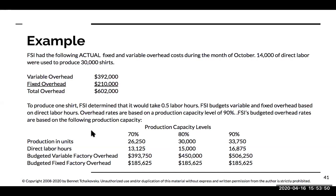Let's take a look at our ever-evolving example. FSI had the following actual fixed and variable overhead costs during the month of October. Looking back at the second video, there were 14,000 hours of direct labor used to produce 30,000 shirts. FSI had variable overhead of $392,000 and fixed overhead of $210,000, for a total overhead of $602,000. To produce one shirt, they budgeted 0.5 labor hours. So for 30,000 shirts, the standard hours would be 15,000.